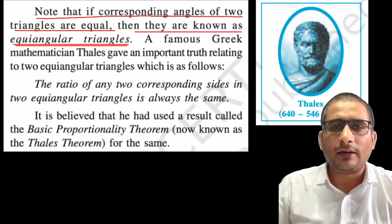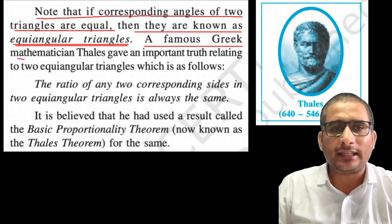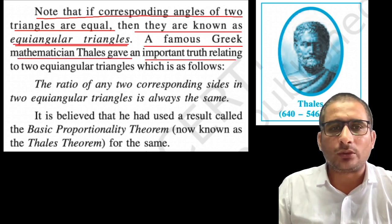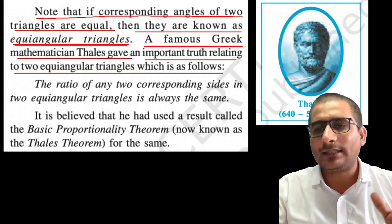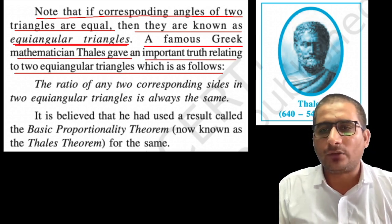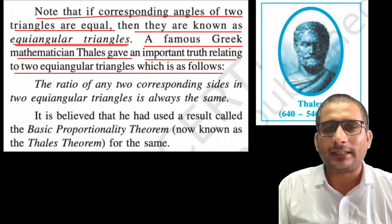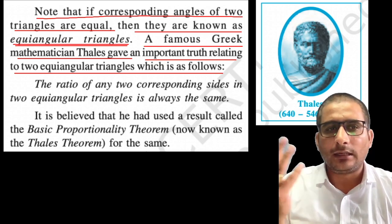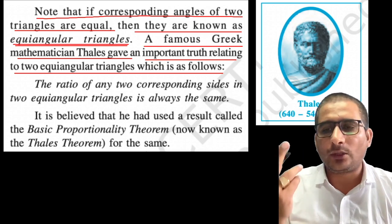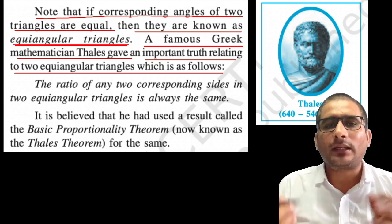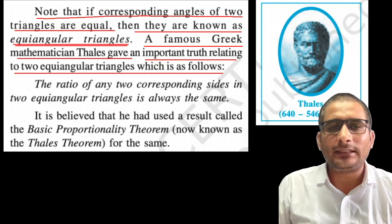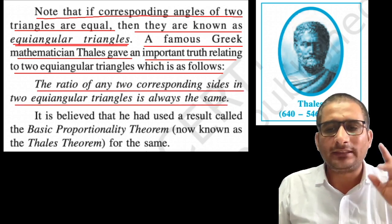A famous Greek mathematician Thales gave an important truth relating to two equiangular triangles. Thales lived from 640 to 546 BC. Thales told us that if there are two equiangular triangles, then the ratio of any two sides in two equiangular triangles is always the same.